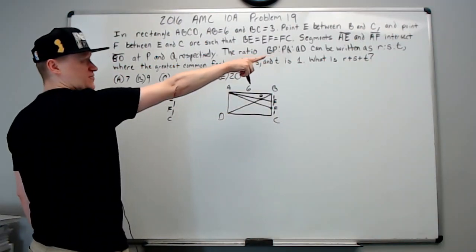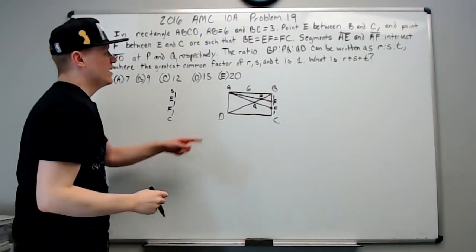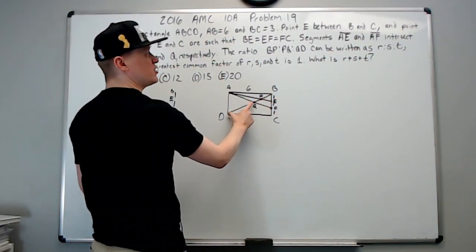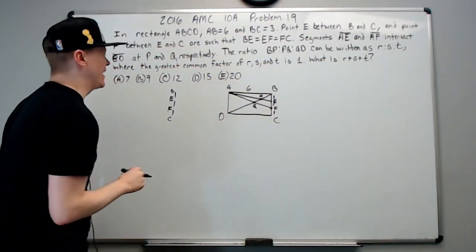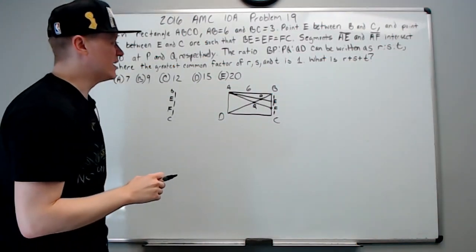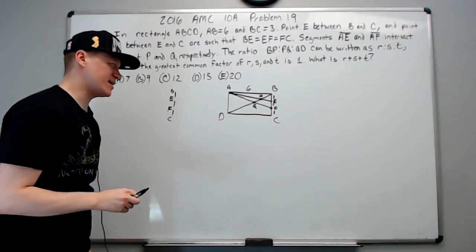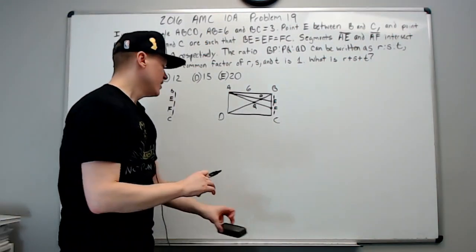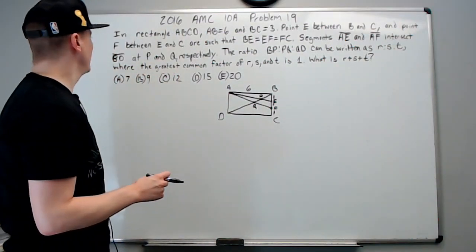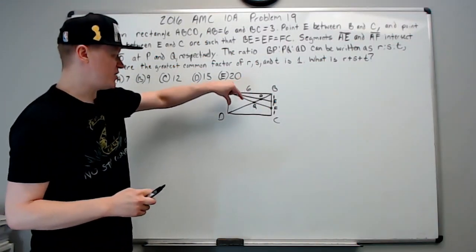Okay, the ratio BP to PQ to QD can be written as r to s to t where the greatest common factor of r, s, and t is one. What is r plus s plus t? Okay, so we have to get a simplified ratio and we need them to all be integers, and then we have to add the numbers.